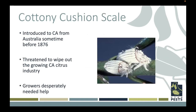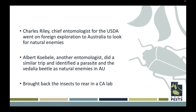Cottony cushion scale arrived in California from Australia sometime before 1876, and it's a really bad citrus pest — very detrimental to the citrus industry in California. So an entomologist from the USDA went to Australia to look for natural enemies that had co-evolved with this cottony cushion scale where it was from, to find things that were eating it and see if they could be brought over to the U.S. to hopefully control the cottony cushion scale here in North America.